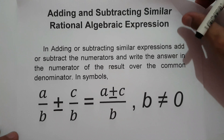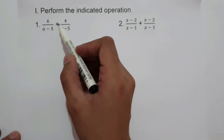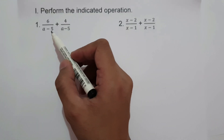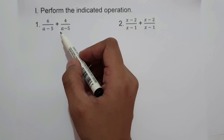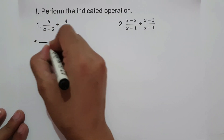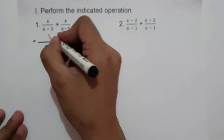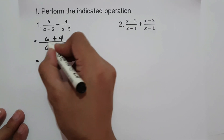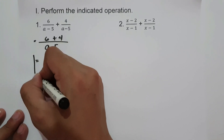Let's have an example. We are going to perform the indicated operation. On number 1, we have 6 over (a minus 5) plus 4 over (a minus 5). As you can see, we have the same denominator. So we simply copy the denominator, a minus 5, and then add the numerators: 6 plus 4 is 10. So our final answer is 10 over (a minus 5).